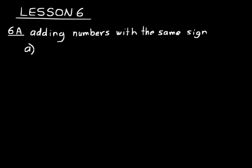Let's do some practice problems. For example, positive five and positive three. When numbers have the same sign, we look at the numeral parts — the absolute values. Five plus three is eight, and we give the answer the sign that both original numbers had. So the answer is positive eight. With plus five and plus three, that's pretty obvious.